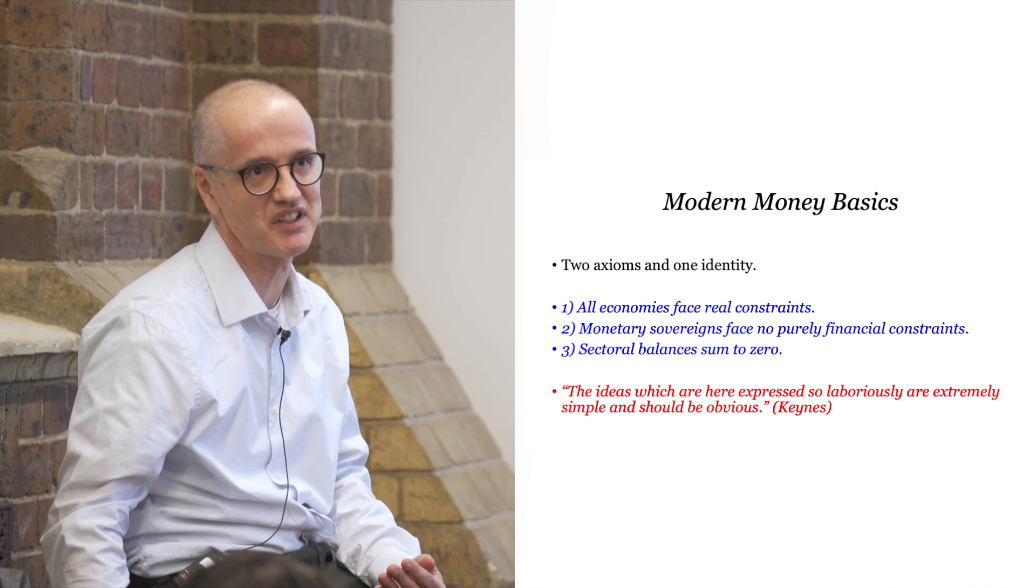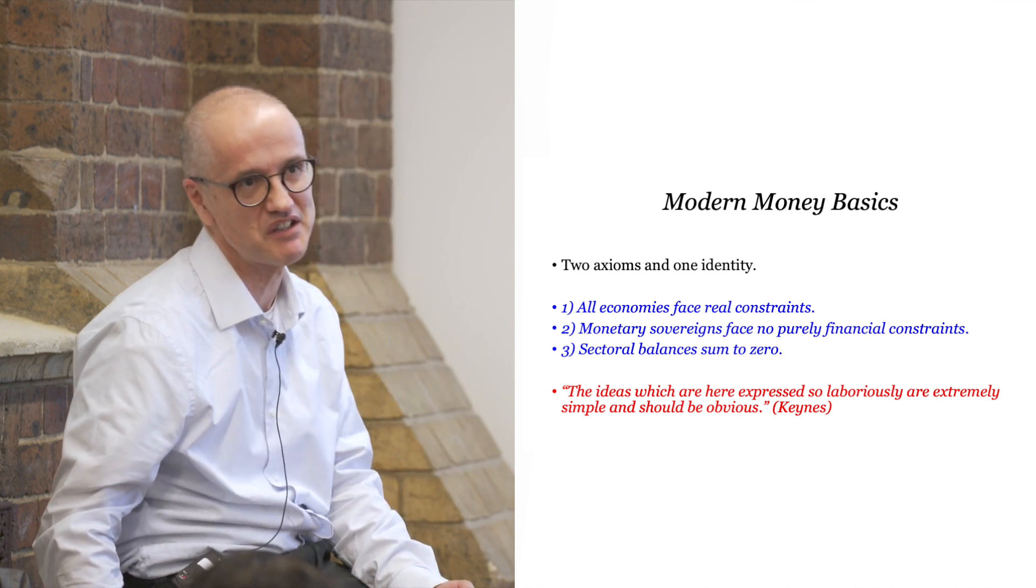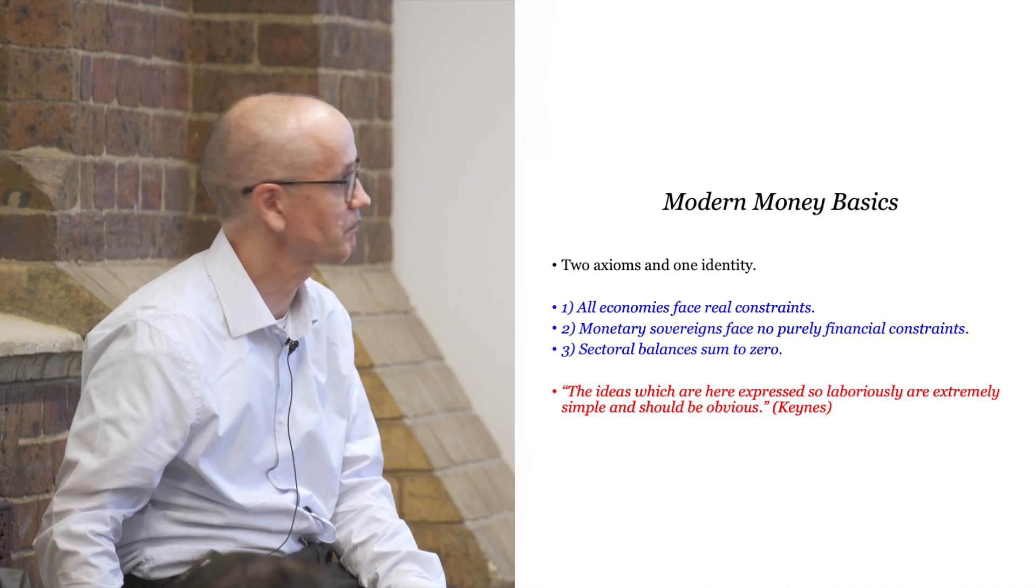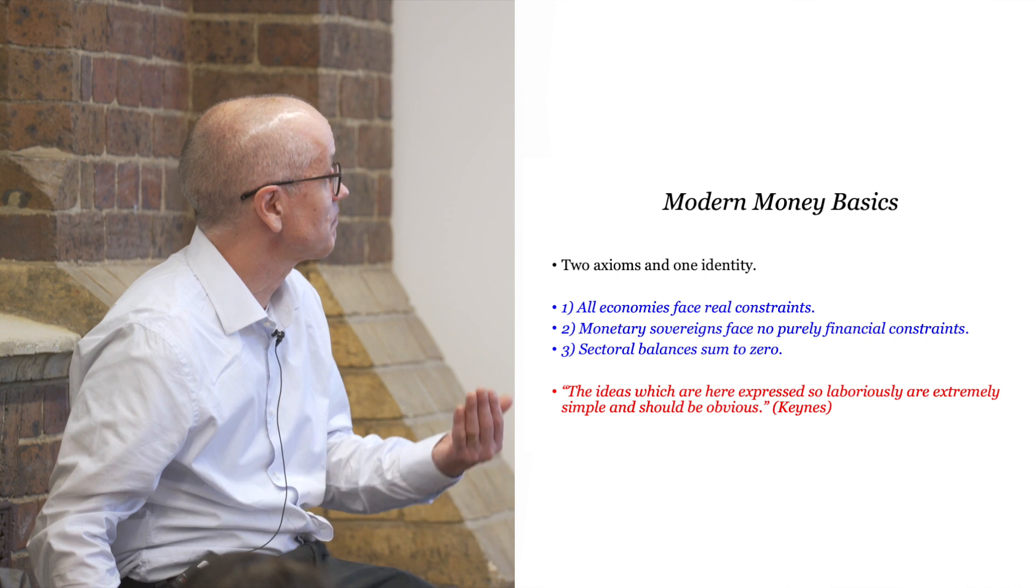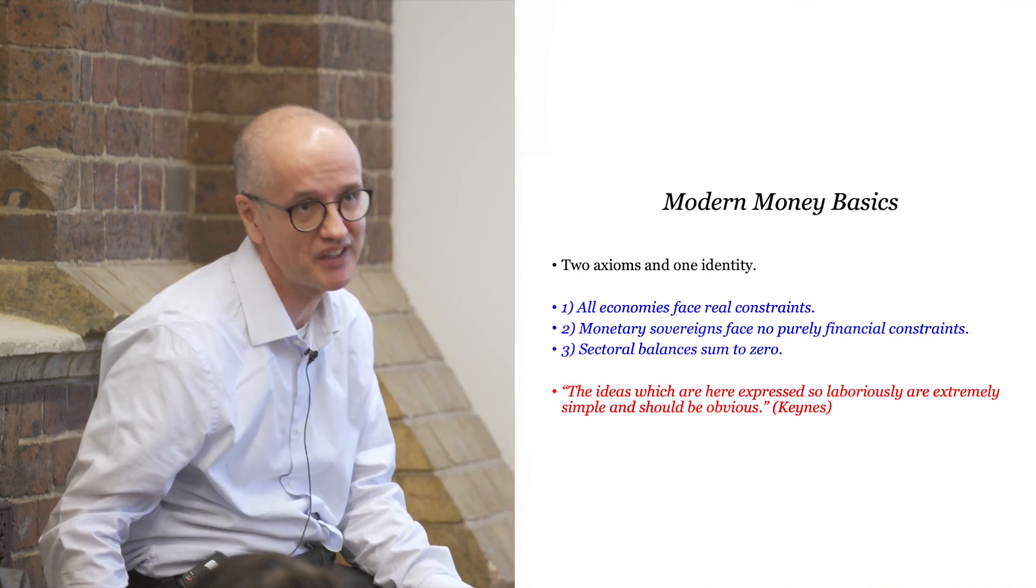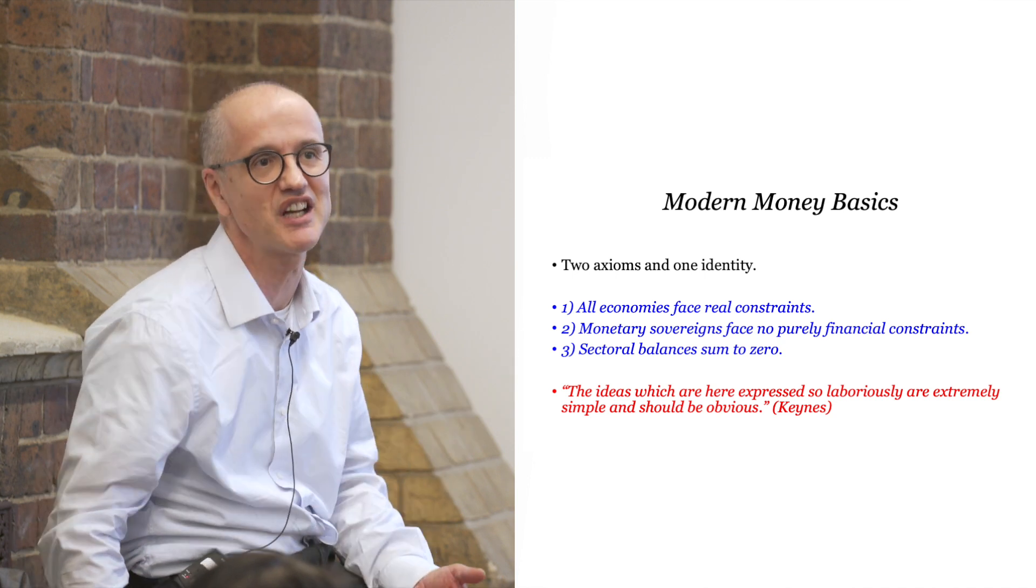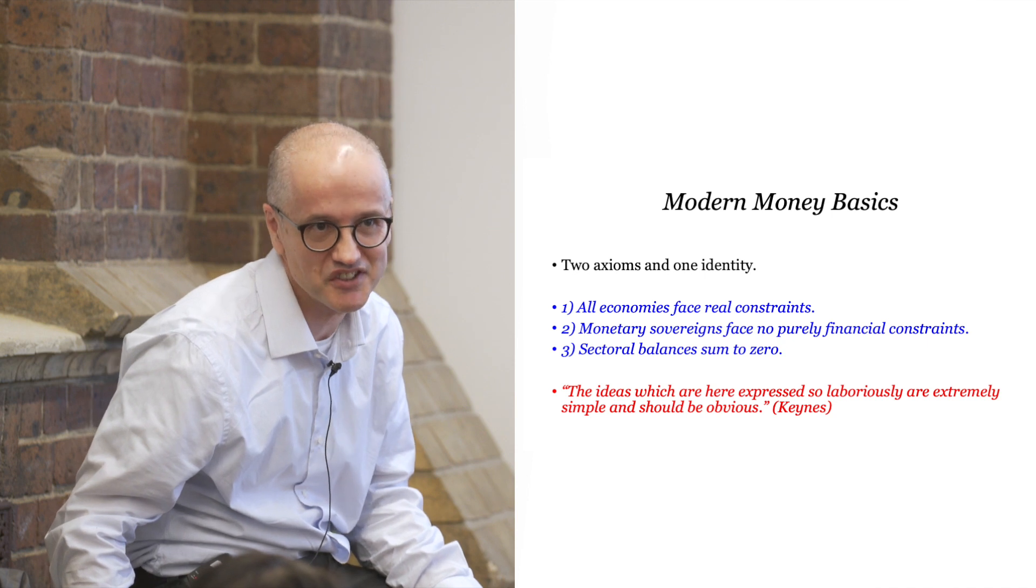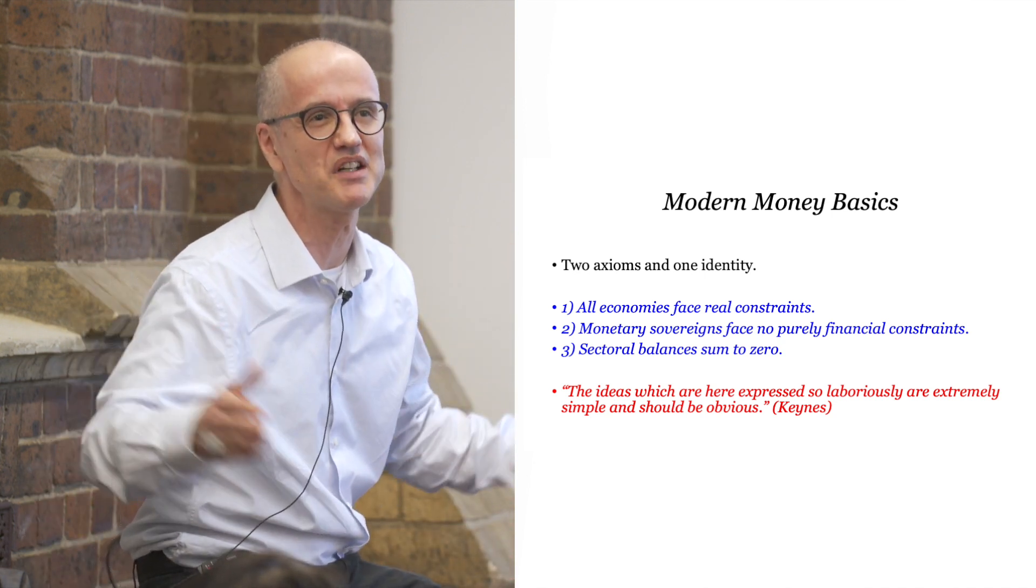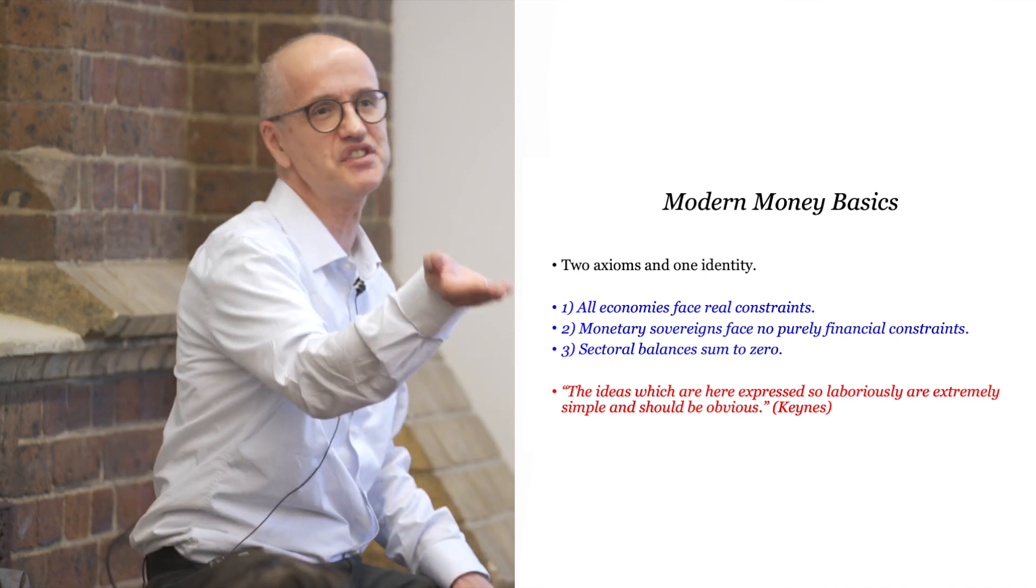If we spend beyond that productive capacity, then it's going to cause a problem in terms of accelerating inflation. We accept that. Modern monetary theory does not dismiss the problem of inflation. In fact, in some ways, we think we take it more seriously than mainstream economists do. MMT is not a recipe for limitless spending. That first statement is obviously correct. It's an axiom. Well, so is the second one. If you are the monopoly issuer of Australian dollars, you cannot run out of Australian dollars.